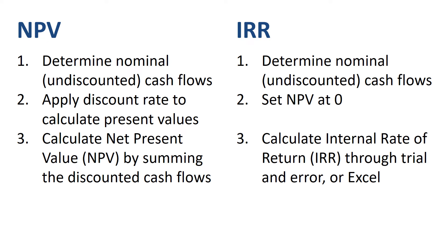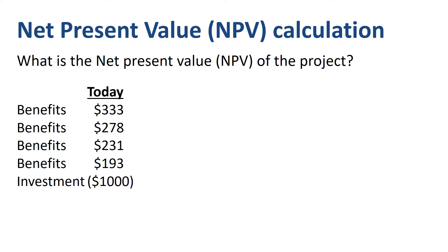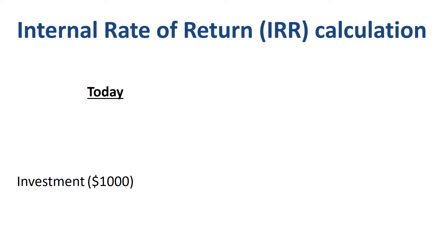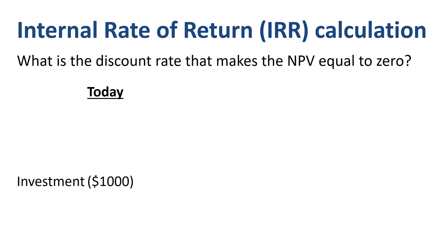Let's illustrate that with numbers. In NPV calculations the main question is: what is the net present value of the project? Sum the present values of the future cash flows, and you have your NPV. In IRR calculations the main question is slightly different: what is the discount rate that makes the NPV equal to zero?